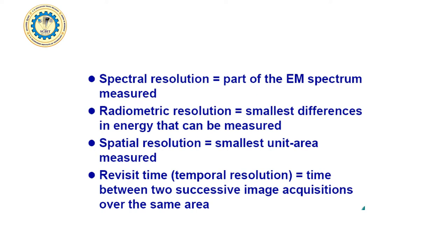Before going into image interpretation, we need to understand image resolution — resolution means clarity. We are habitual to getting very clear pictures. With a normal 2 GB camera, clarity will not be good; those with a very high resolution camera produce photographs with very high clarity. Here, the clarity concept is addressed through four types of resolution: spectral, radiometric, spatial, and temporal resolution — the last being revisit time.